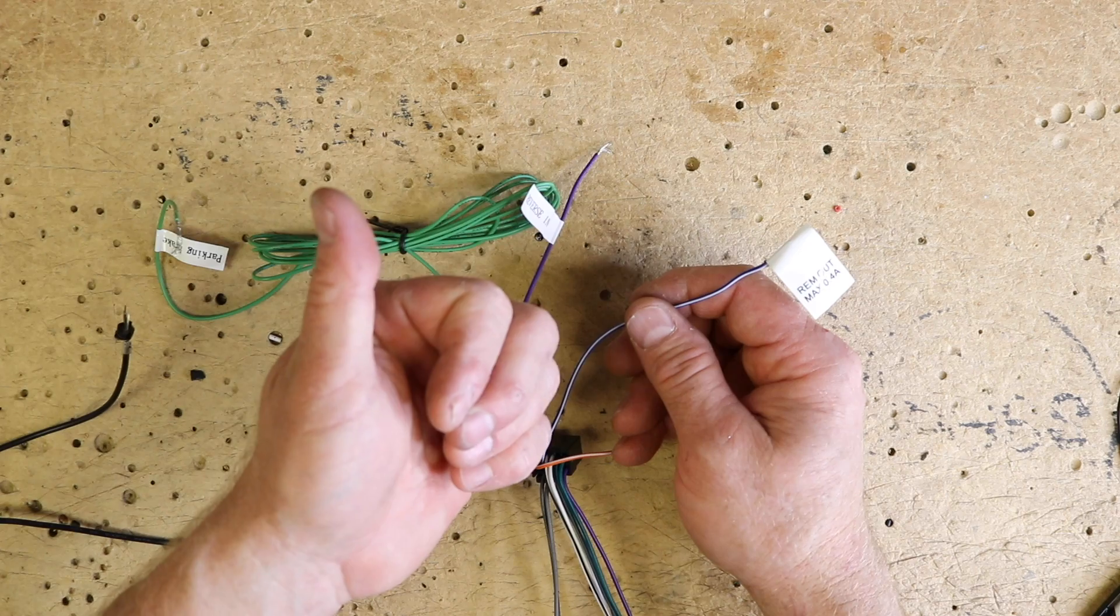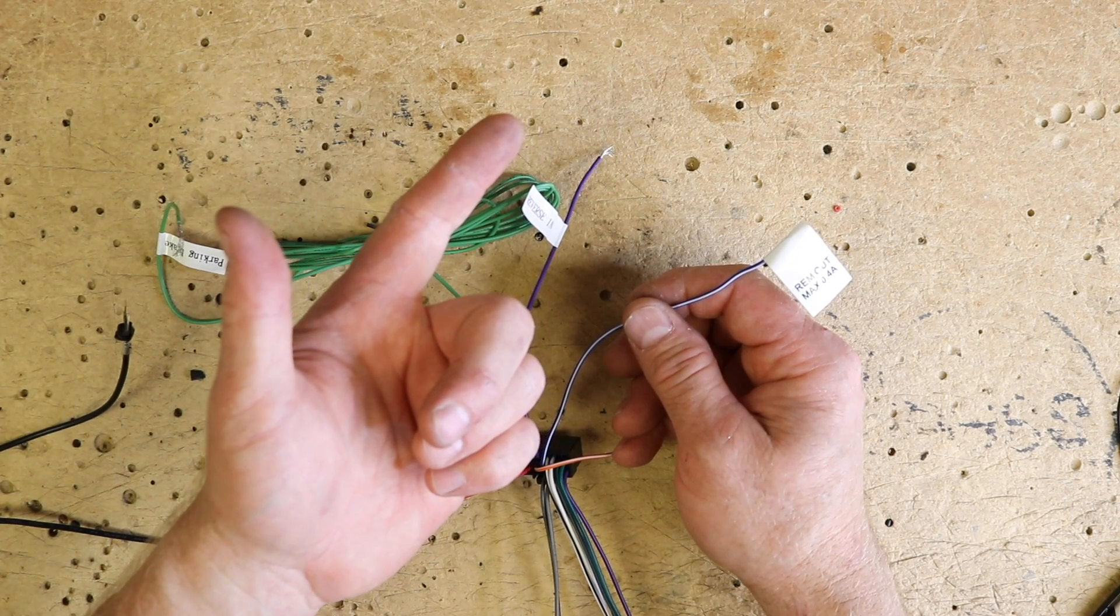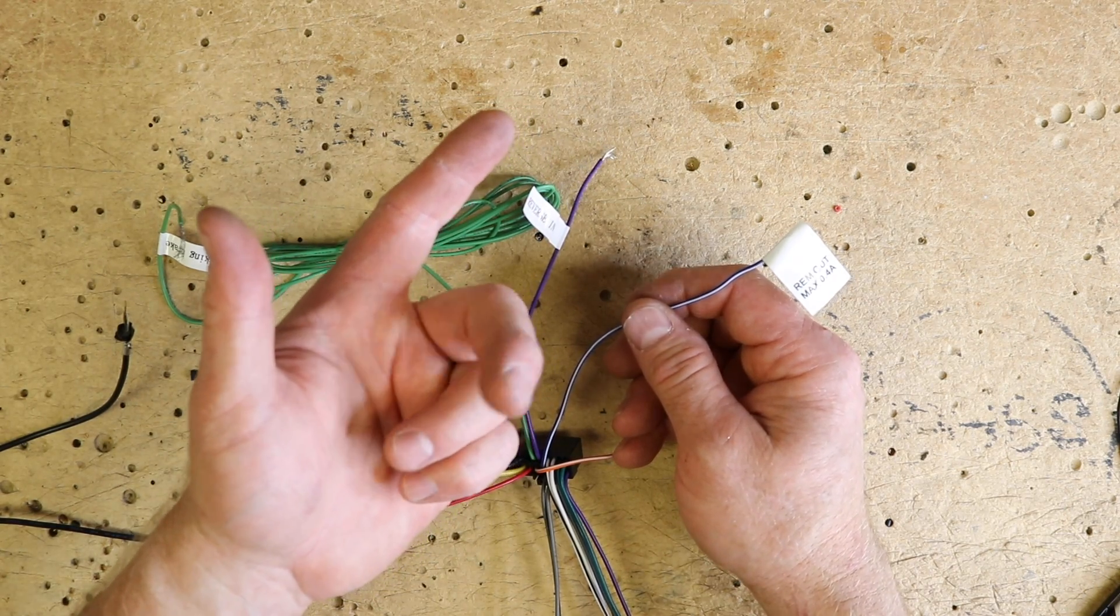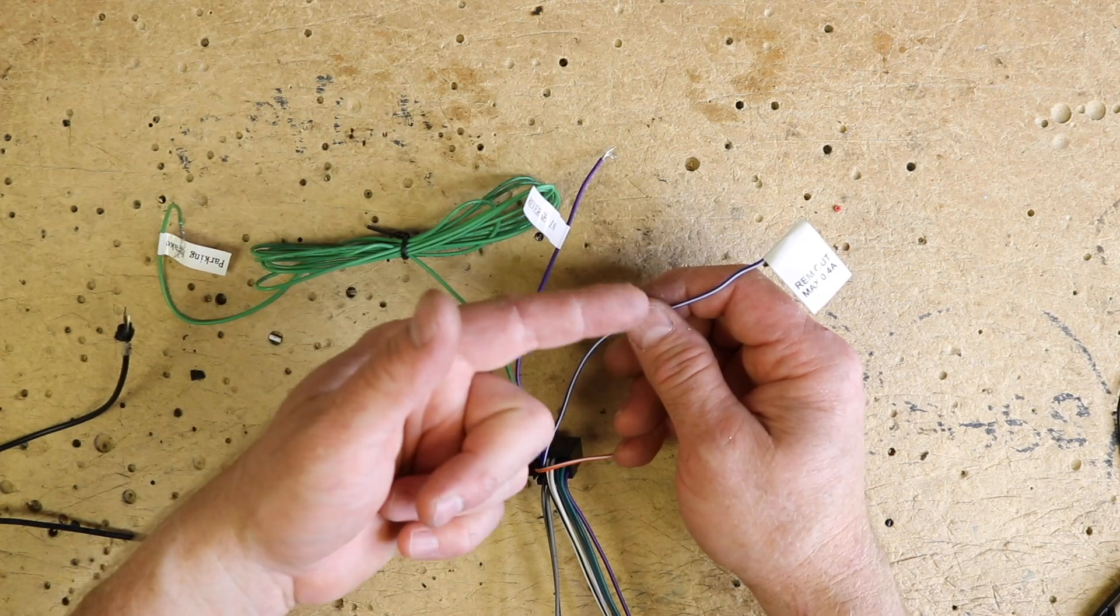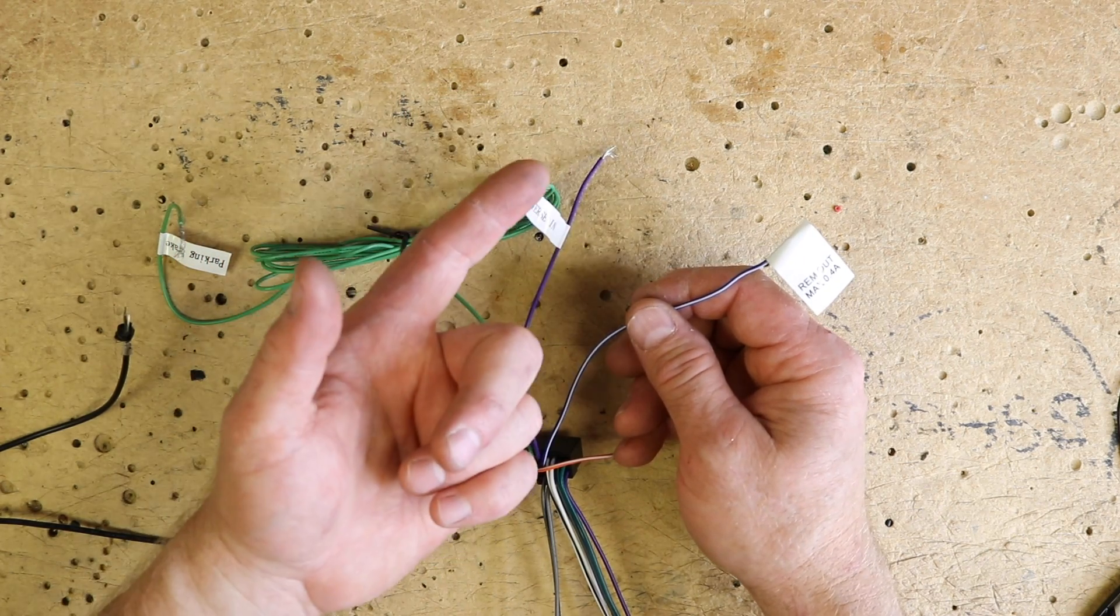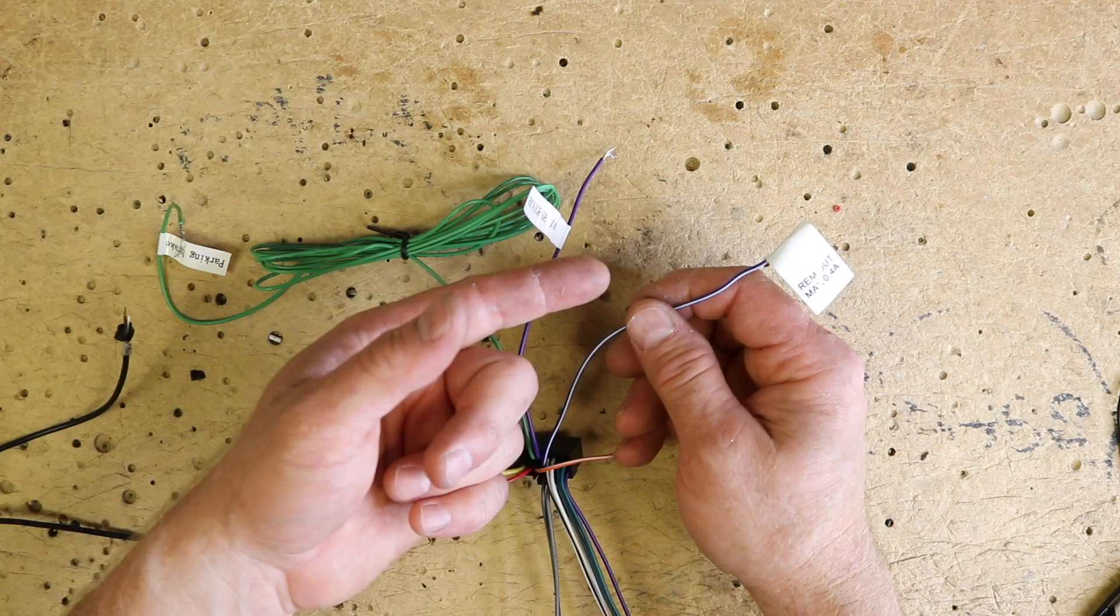This is basically enough to turn on one amplifier. If you're going to do, let's say, a sub-amp, a power antenna or an amplified antenna, and a factory amplifier, you're going to need a relay, which we do have a video up on how to add a relay to this wire.